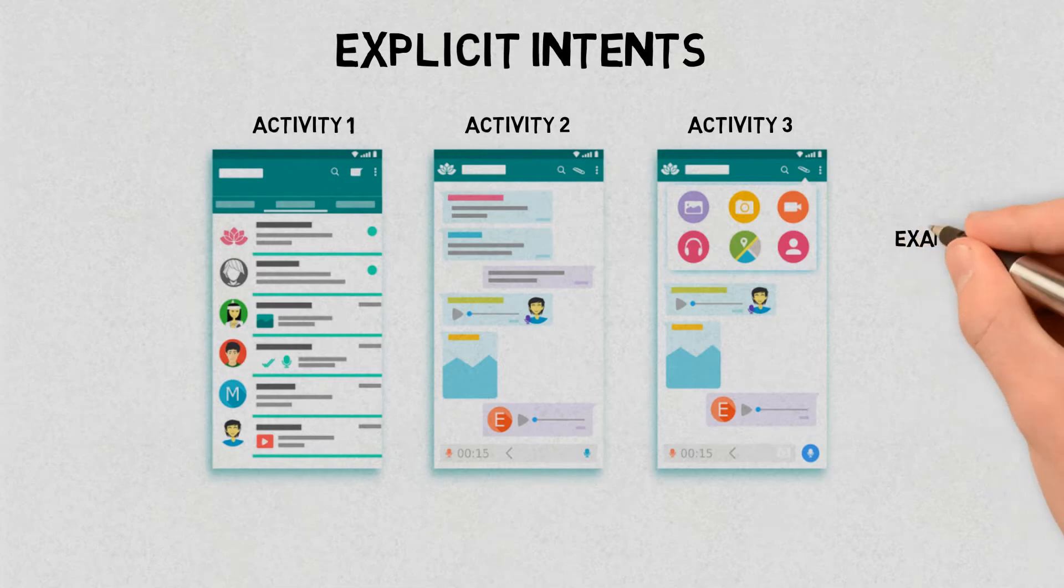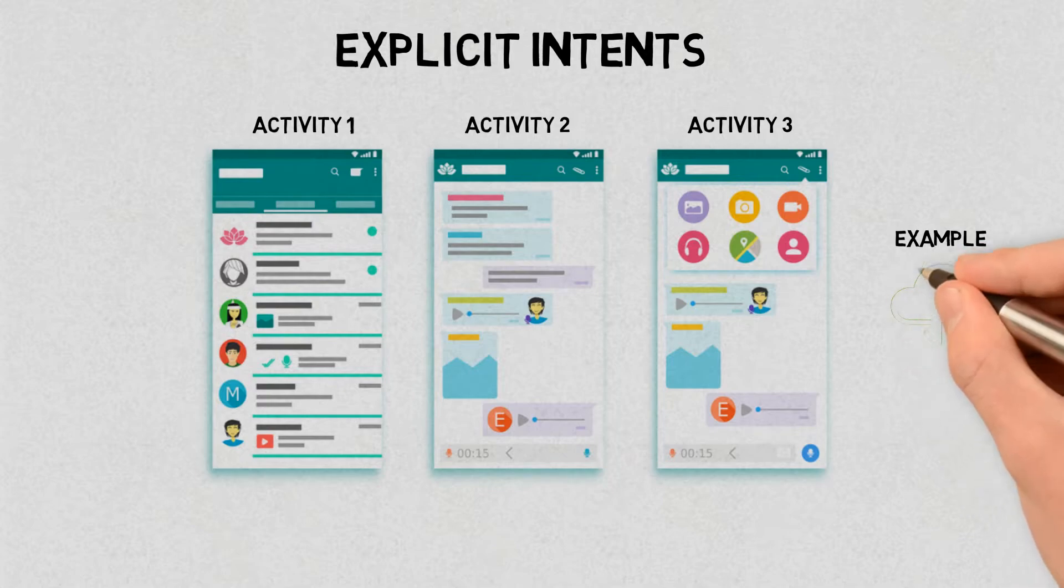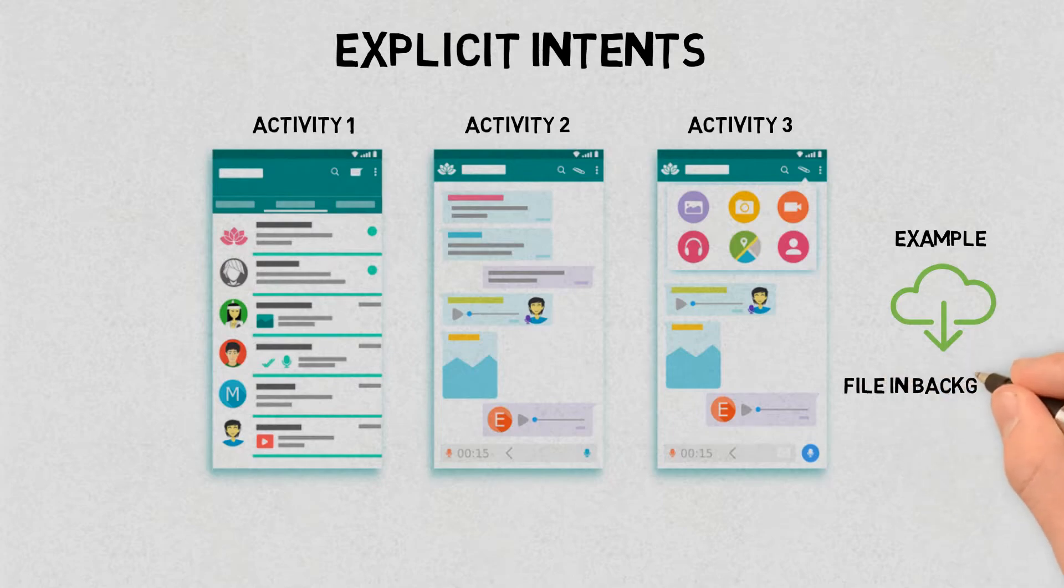For example, you might start a new activity within your app in response to a user action or start a service to download a file in the background. In the previous video, we have seen how to create and use an explicit intent.